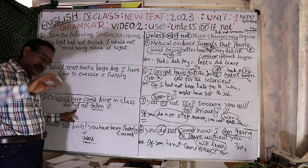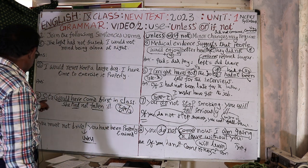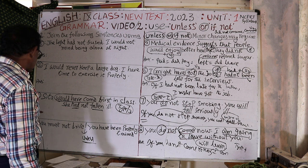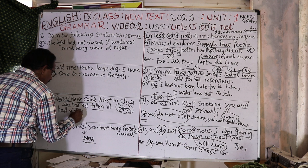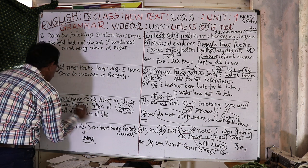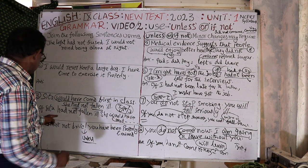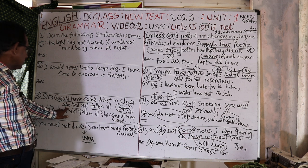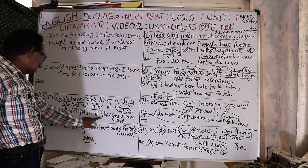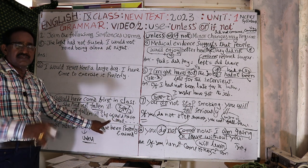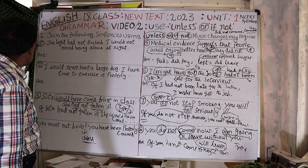What type is this? Type number 3. If Seta had not fallen, she would have come first in class. We can write a sentence with this meaning: If Seta had not fallen, she would have come first in class. This is the answer. Then we will go to the second one.